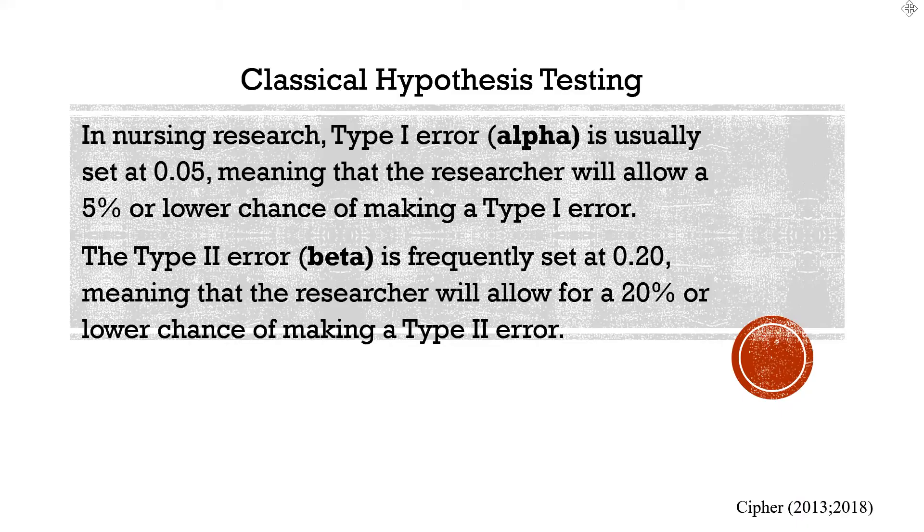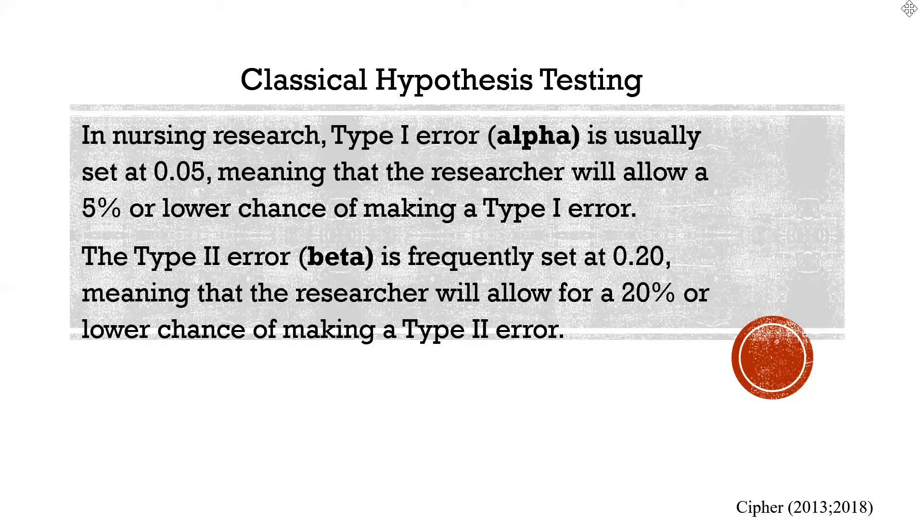The type 2 error, or abbreviated as beta, is typically set at 0.2 or 20%, sometimes at 15%. So, we're generally comfortable with a 20% or lower chance of making a type 2 error.